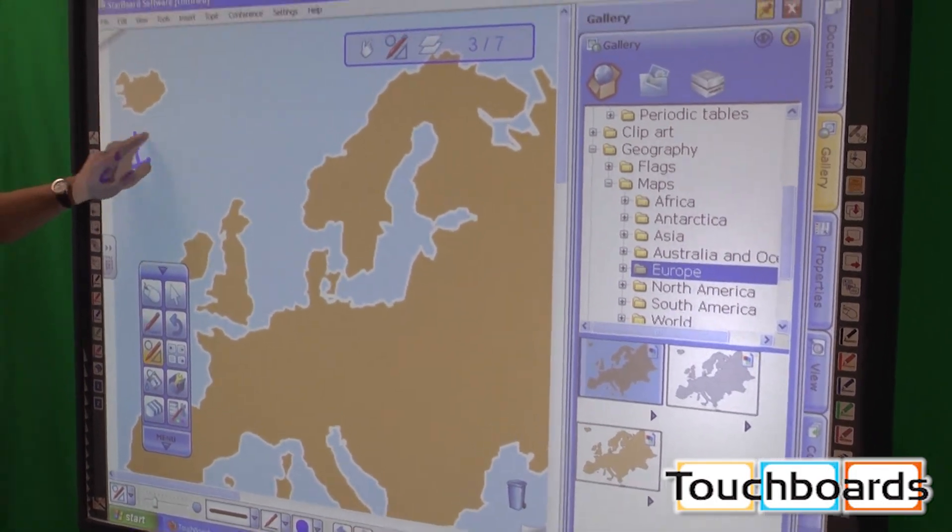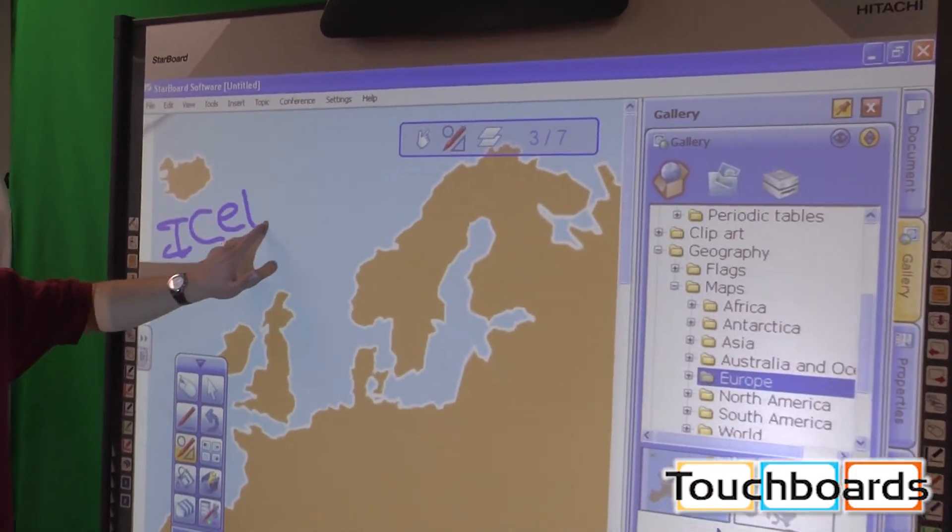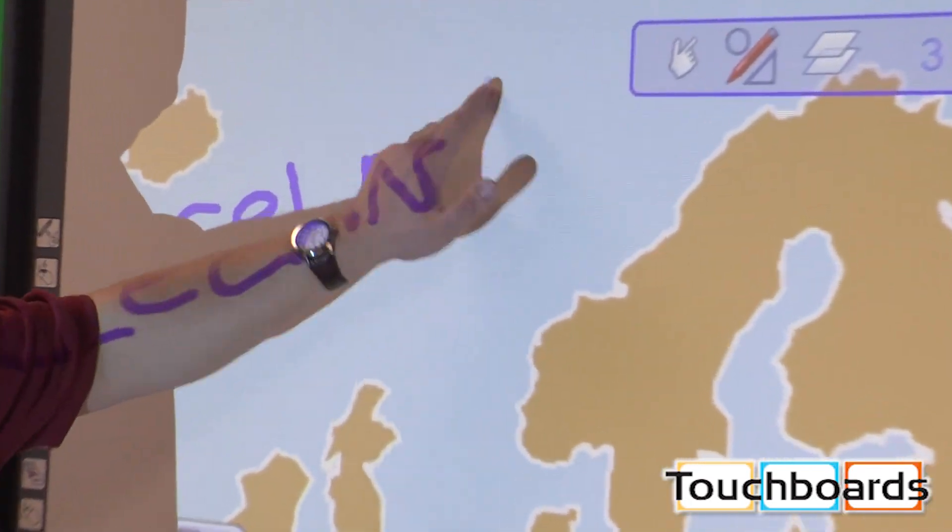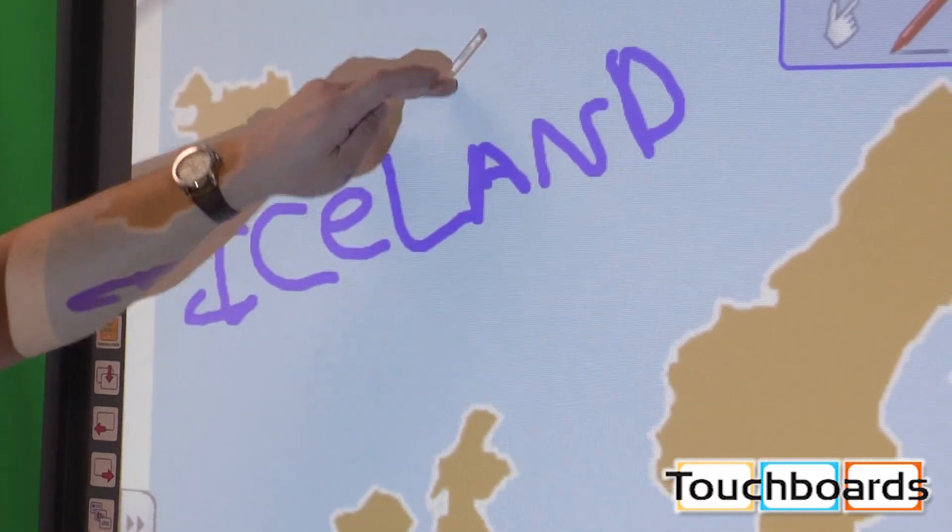IntelliPen. We can write Iceland. We can draw a little arrow to it.